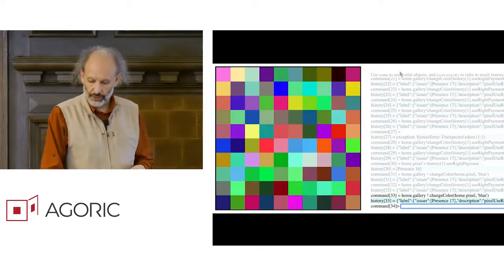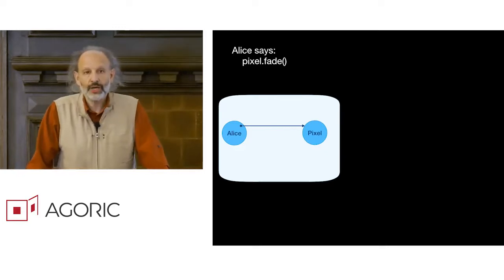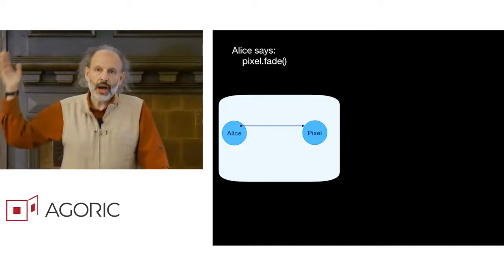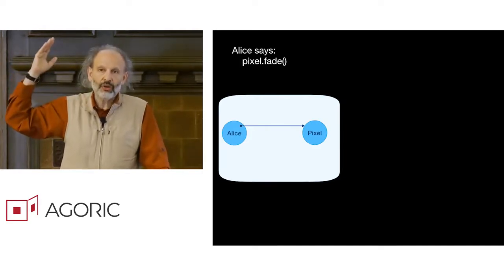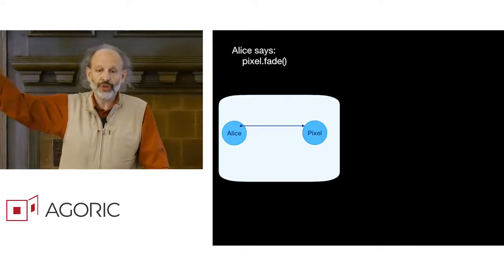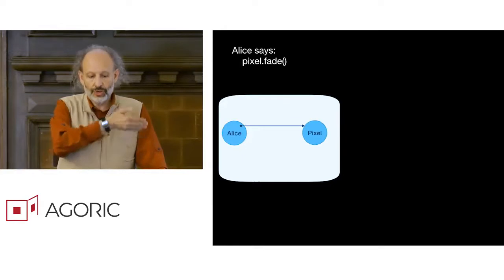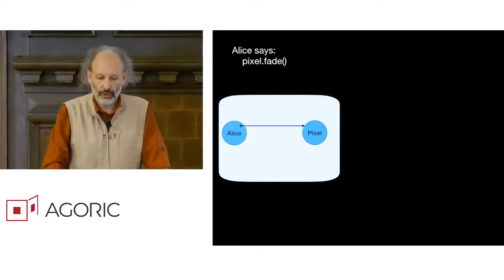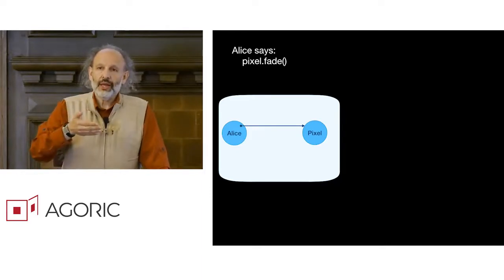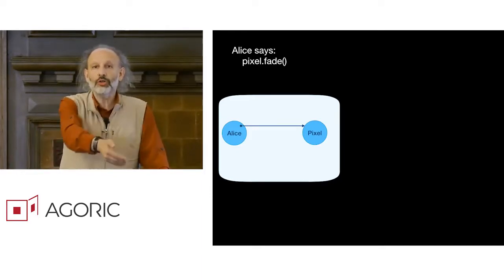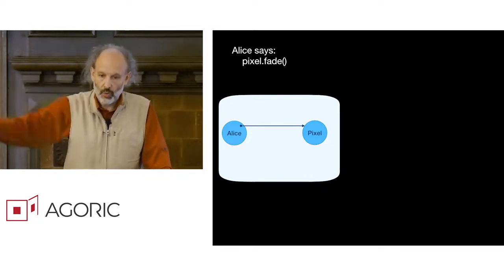So what's going on under the surface? As is familiar from any memory safe object programming language, if object Alice has a reference to object pixel, object Alice can invoke object pixel, can say pixel dot fade, and the result is that a fade message goes from Alice to the pixel. What if the pixel is not on Alice's machine, is not co-located with Alice? What if the pixel is elsewhere on a chain as in what you saw?